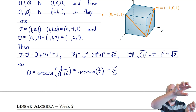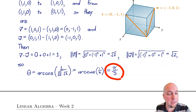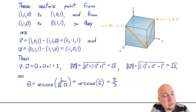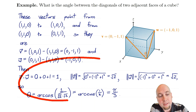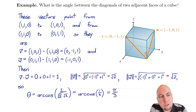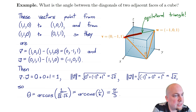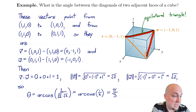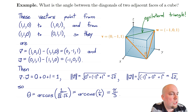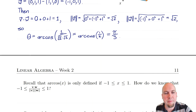Another way to see the answer is to think geometrically. If you draw one more diagonal face connecting the endpoints of the two diagonals we found, you get an equilateral triangle — all three face diagonals have the same length. In any equilateral triangle the angles are 60 degrees or pi over 3. That's a quicker way to get the answer, but it requires a clever geometric insight, so it may be a little trickier.